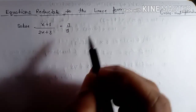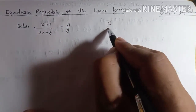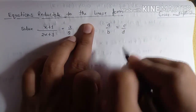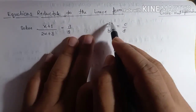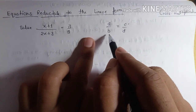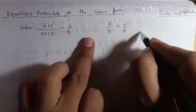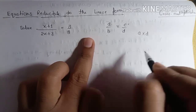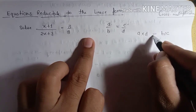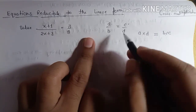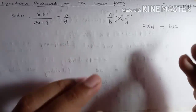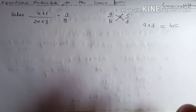You can do one thing: if this is written as a upon b and c upon d, you can multiply this numerator by this denominator and this numerator by this denominator — means multiply a into d and b into c and put a sign of equality. This is called cross multiplication.